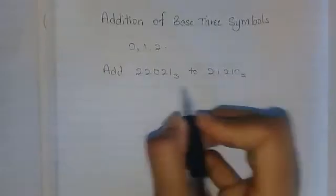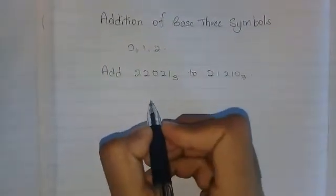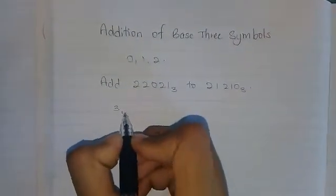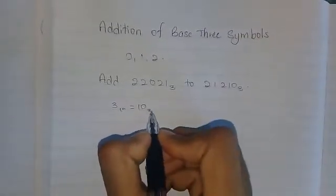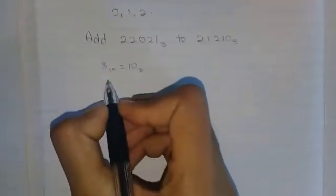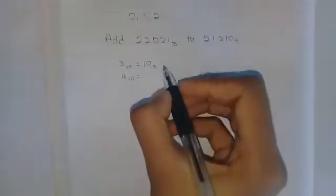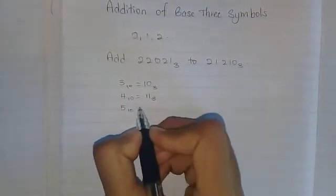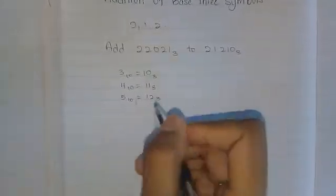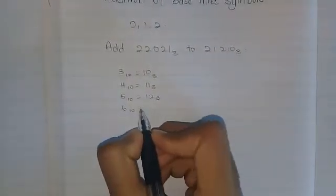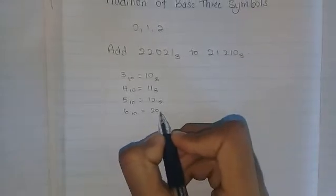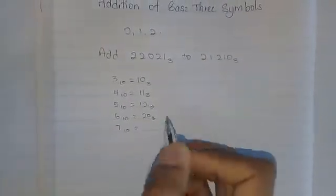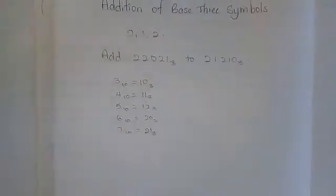Now, we'll have to set this down here. And we must remember first thing first that 3 base 10 is equal to 10 base 3, 4 base 10 is equal to 11 base 3, 5 base 10 is equal to 12 base 3, 6 base 10 is equal to 20 base 3, and 7 base 10 is equal to 21 base 3.